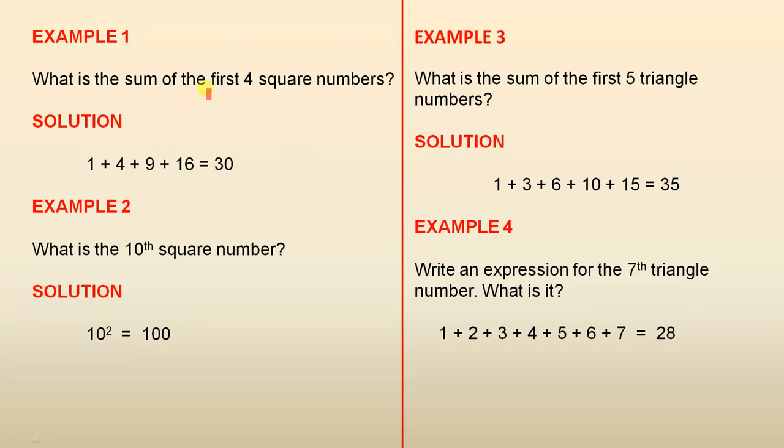Example 1: What is the sum of the first 4 square numbers? The solution is 1 plus 4 plus 9 plus 16, because it's 1 squared, 2 squared, 3 squared and 4 squared. When you add those up you get 30. Example 2: What is the 10th square number? Well, the 10th square number is 10 squared, that gives you 100.